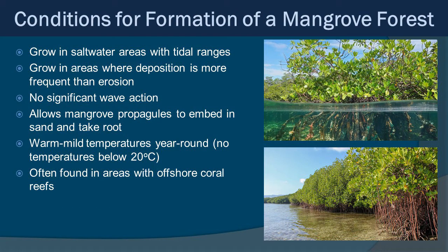Mangroves grow in saltwater areas with some tidal range. They also grow in areas where there's more deposition than erosion, which is where you see sandy and muddy shorelines and substrate. This allows mangrove propagules to embed in the sand and take root in a calm area with not a lot of wave action. They grow in warm to mild temperatures year round — generally below 20 degrees Celsius you're not going to find mangroves. Here in Florida, as you go farther north, you transition from mangrove shorelines to salt marsh shorelines because the temperature gets too cold. They are also often found in areas with offshore coral reefs, because coral reefs provide a first buffer for wave action, allowing a more calm shoreline for mangrove development.